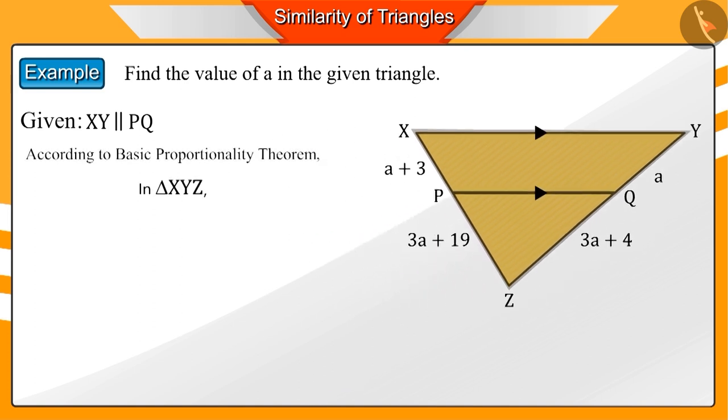Hence, according to the basic proportionality theorem, we can say that in triangle XYZ, XP divided by PZ equals YQ divided by QZ.